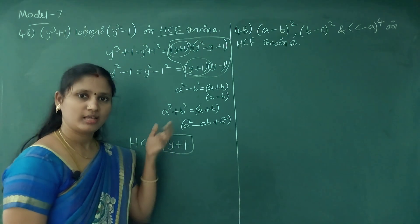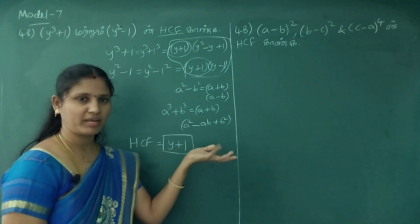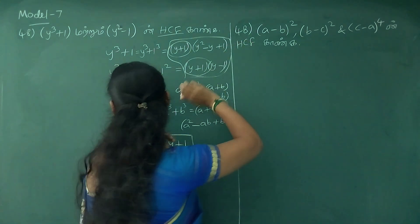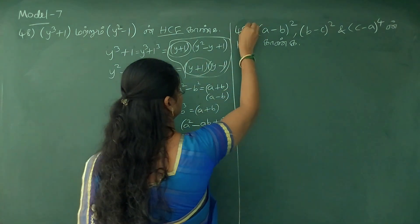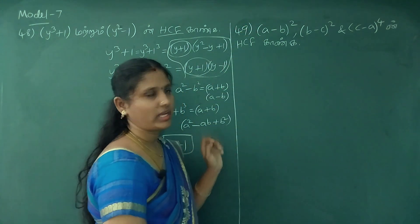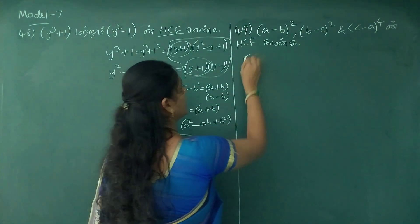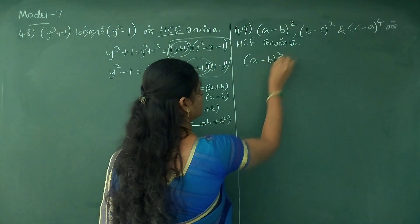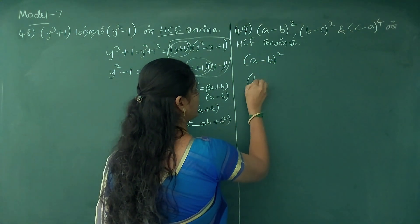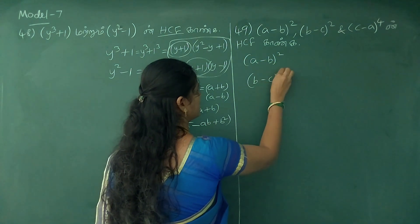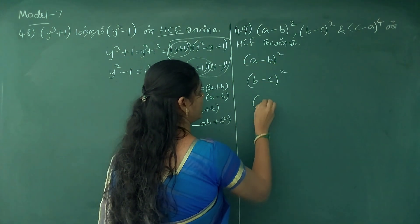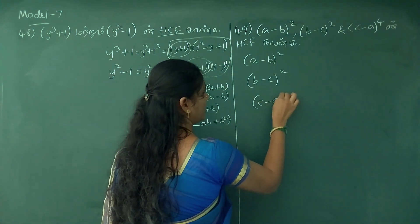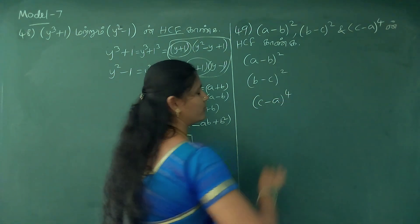So you can see the sum is 690. Now you can see: a minus b the whole square, b minus c the whole square, c minus a to the whole power 4.